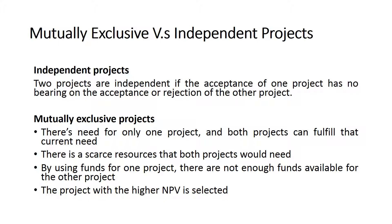We have different scenarios: one where we have independent projects, and another where we have mutually exclusive projects. With independent projects, the acceptance of one project has no bearing on the acceptance or rejection of the other. For example, a company has two projects — project one is buying a photocopier, and project two is buying computers for a department. These are very different, so a decision about one has nothing to do with the other.